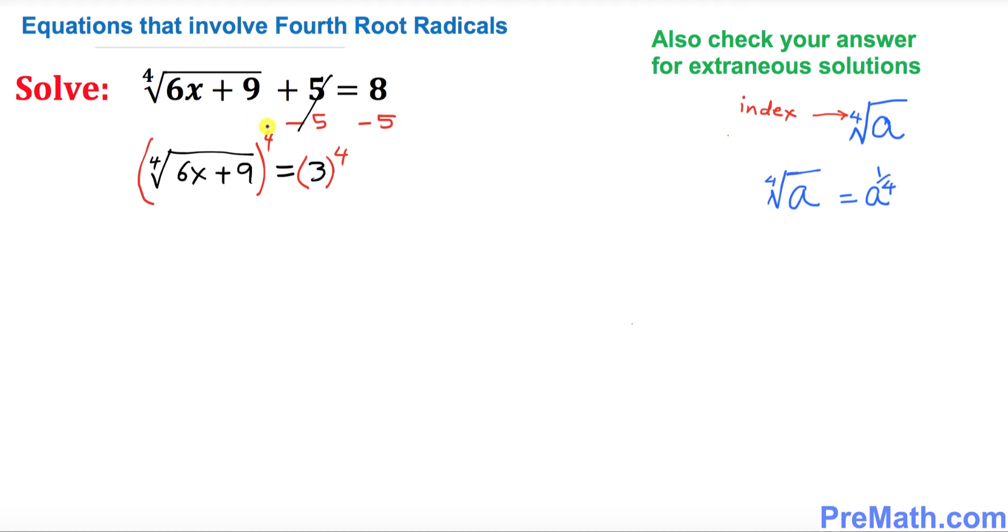Now this power four and fourth root undo each other. 6x plus 9 turns out to be 3 to the power four, which is the same as multiplying 3 four times. That's going to give you 81.